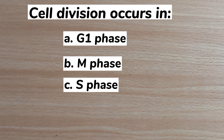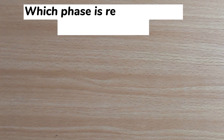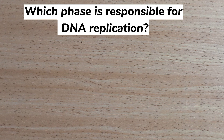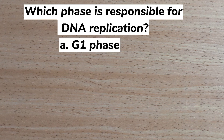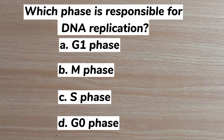Number seven: cell division occurs in — A. G1 phase, B. M phase, C. S phase, D. Prophase. Answer: B. M phase. Number eight: which phase is responsible for DNA replication? A. G1 phase, B. M phase, C. S phase, D. G0 phase. Answer: C. S phase.